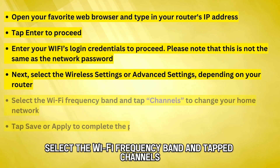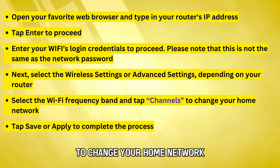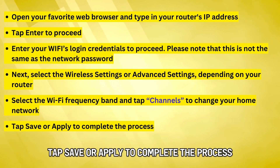Select the Wi-Fi frequency band and tap Channels to change your home network. Tap Save or Apply to complete the process.